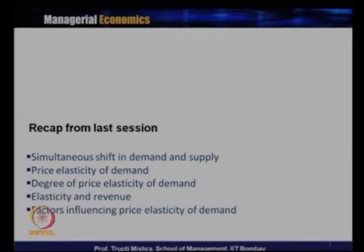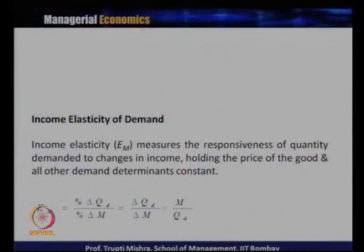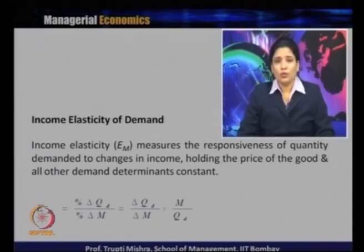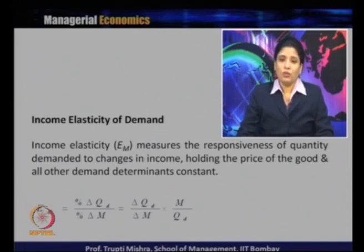In continuation of these topics, today we will discuss the next type of elasticity of demand, that is income elasticity of demand. Consumer income is one of the factors which influences the quantity demanded. So what should be the change in quantity demanded when consumer income changes — whether it increases or decreases — and what is the exact proportionate change in quantity demanded when there is a change in income?